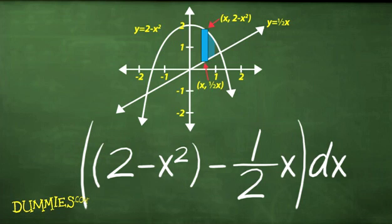Area equals height times base, so the area of the representative rectangle equals this. Remember, the height of a representative rectangle is always its top minus its bottom. It doesn't matter if these numbers are positive or negative.